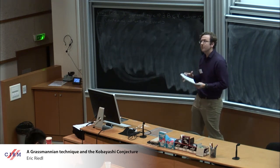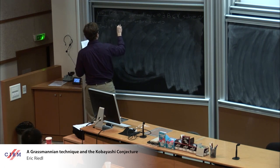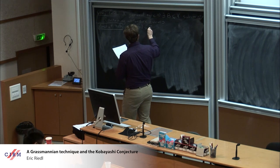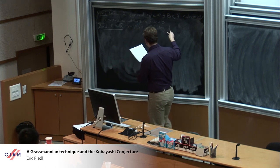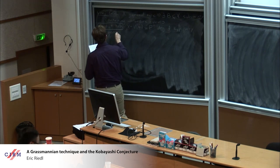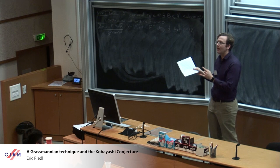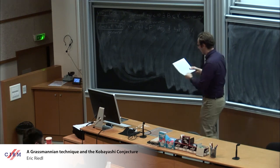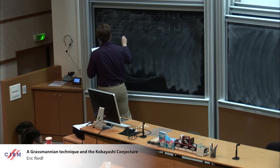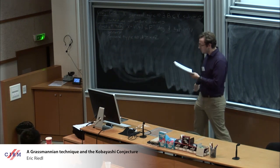I love hypersurfaces, so for the rest of the talk I'll focus on that case. Let X be the vanishing set of a polynomial F in P^N. X will have degree D, and let's let it be very general, which means, in the moduli space of hypersurfaces, it's the complement of a countable union of subvarieties. For hypersurfaces, general type is equivalent to D being at least N plus two.